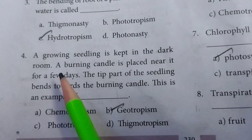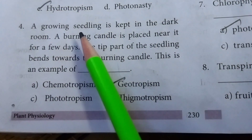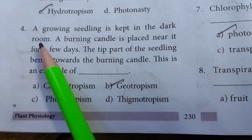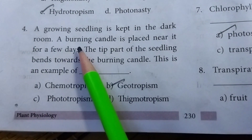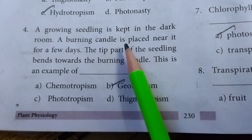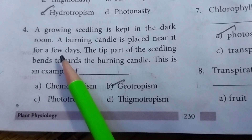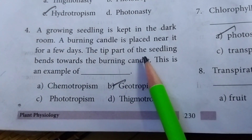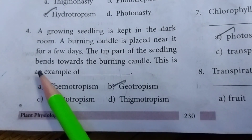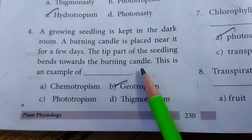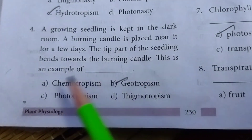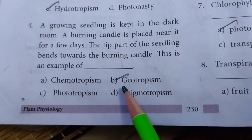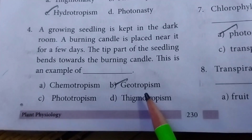Fourth one: a growing seedling is kept in the dark room and a burning candle is placed nearby for a few days. The tip part of the seedling bends towards the burning candle. This is an example of option B, geotropism.